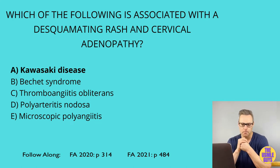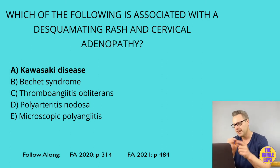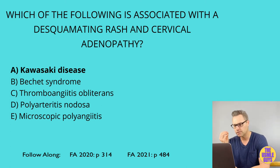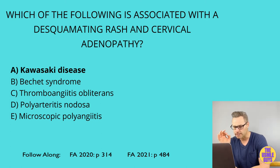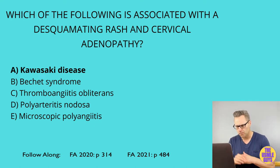Option B here, Behcet syndrome, is a small vessel vasculitis — an immune complex vasculitis associated with HLA-B51, most commonly seen in eastern Mediterranean and Turkish people. It's characterized by recurring aphthous ulcers, genital ulcerations, uveitis, and erythema nodosum. Be sure to recognize the association with HSV or parvovirus. I'll talk more about microscopic polyangiitis in a couple minutes when we go over the small vessel vasculitis conditions.